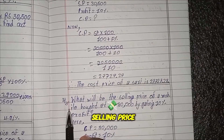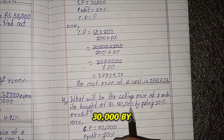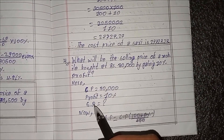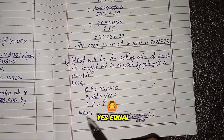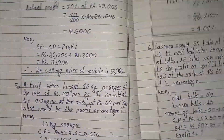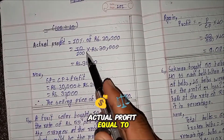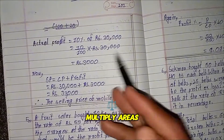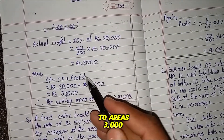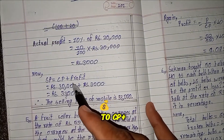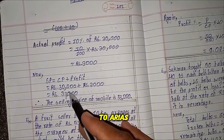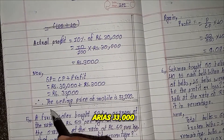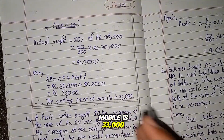Question 4: What will be the selling price of a mobile bought for RS 30,000 by gaining 10 percent profit? Here, CP equals 30,000, profit equals 10 percent. Actual profit equals 10 percent of RS 30,000 equals 10 by 100 multiplied by 30,000 equals RS 3,000. SP equals CP plus profit equals RS 30,000 plus RS 3,000 equals RS 33,000. Therefore, the selling price of the mobile is RS 33,000.